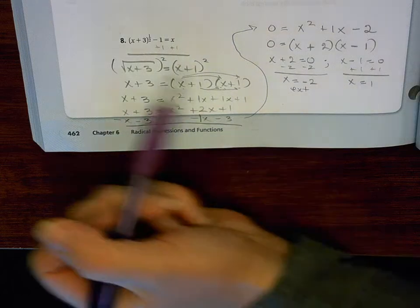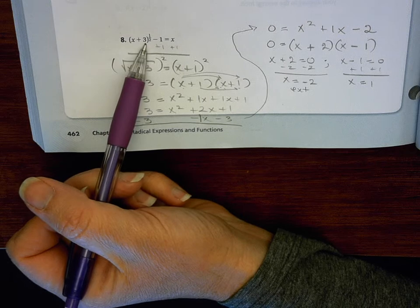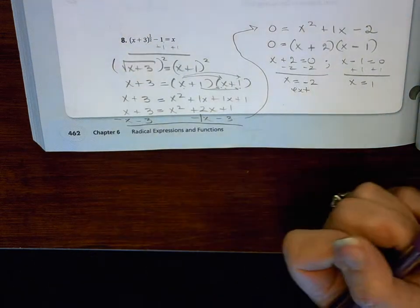And so again, I could plug it into the original to check it as well. So if I plug in 1, that would give me 4. The square root of 4 is 2. 2 minus 1 is 1.